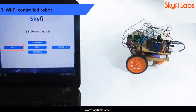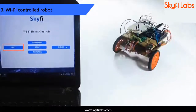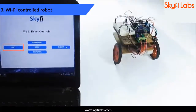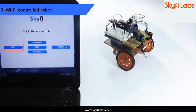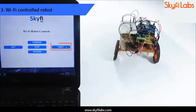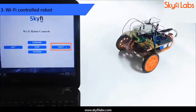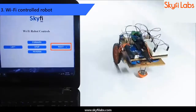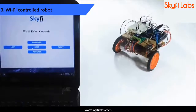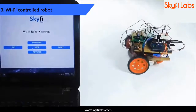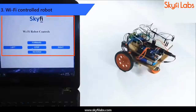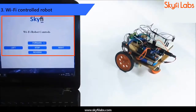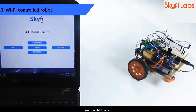Next, you will build a Wi-Fi-controlled robot that uses Wi-Fi communication technology to receive instructions from a user's computer web page and moves accordingly. You will also learn to design a simple web page to control the movements of the robot.